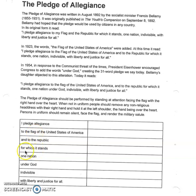Looking at the first four lines again: 'I pledge allegiance' — I promise to be loyal. 'To the flag of the United States of America' — I promise to be loyal to the flag, which is a symbol of the United States. The United States is lots of individual states that join together to form one country. 'And to the republic' — for our democracy. 'For which the flag stands' — one nation, meaning from these individual states we have one single united country.